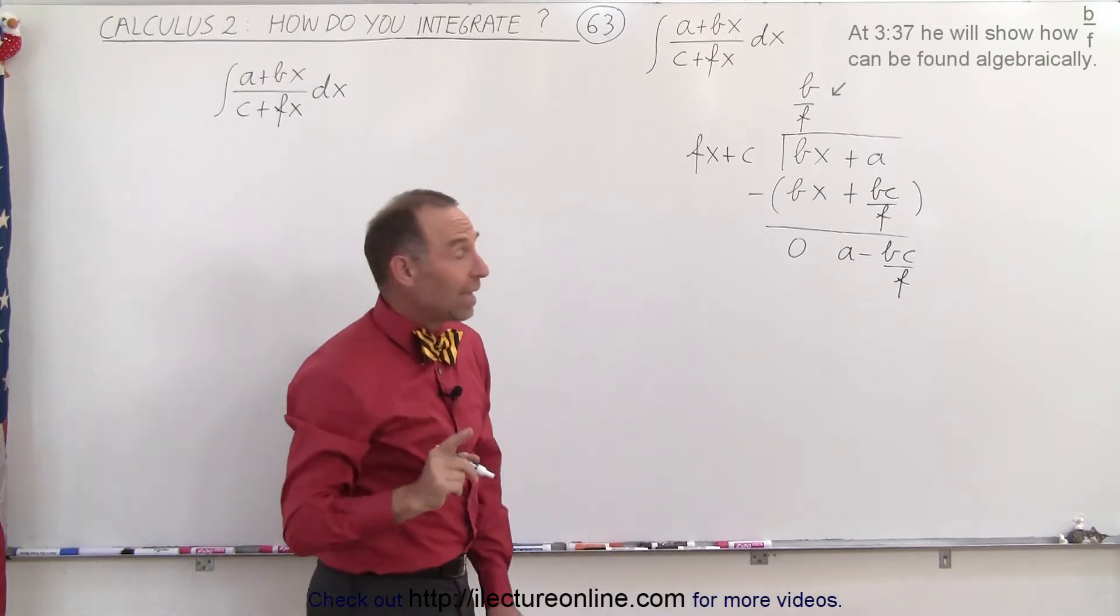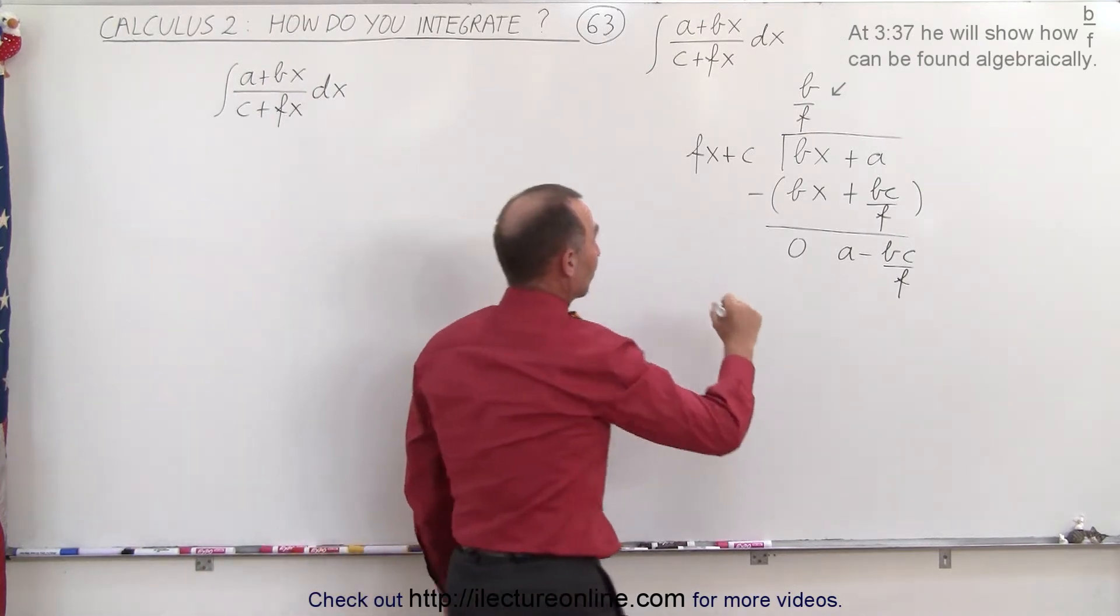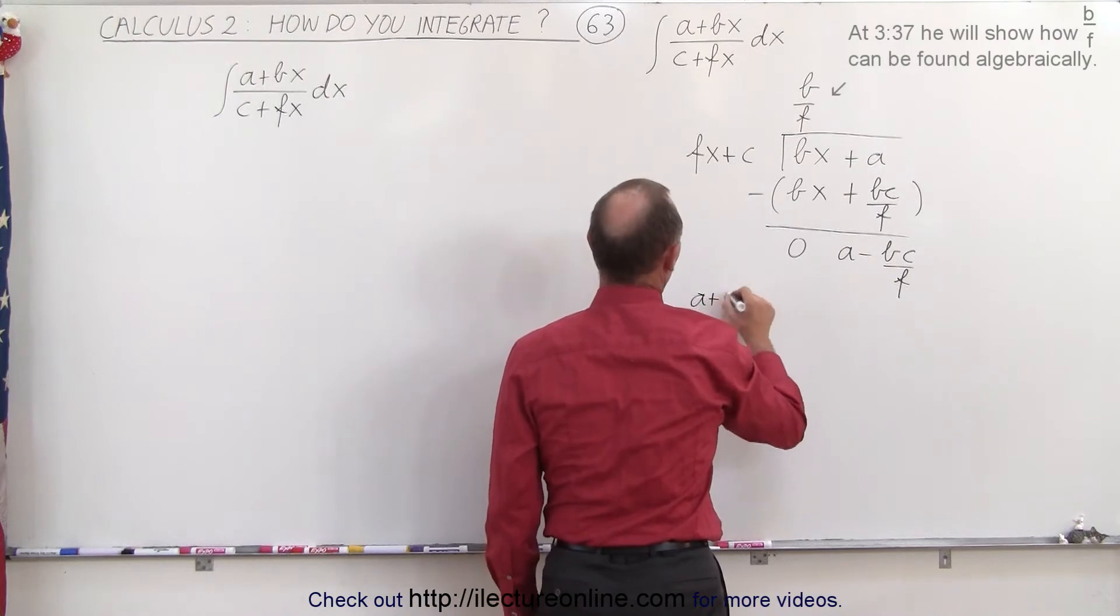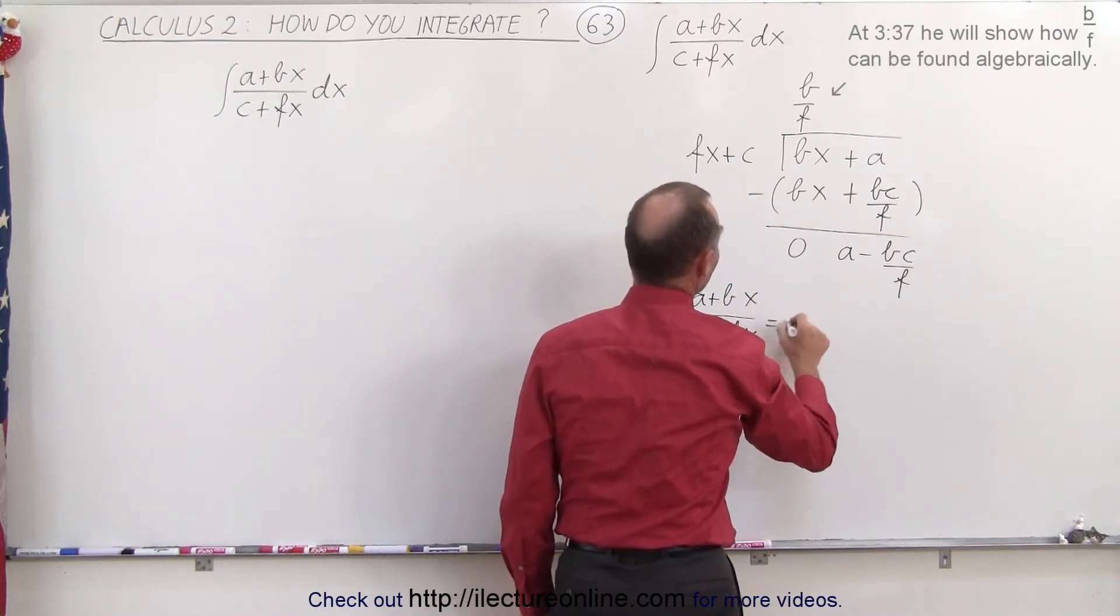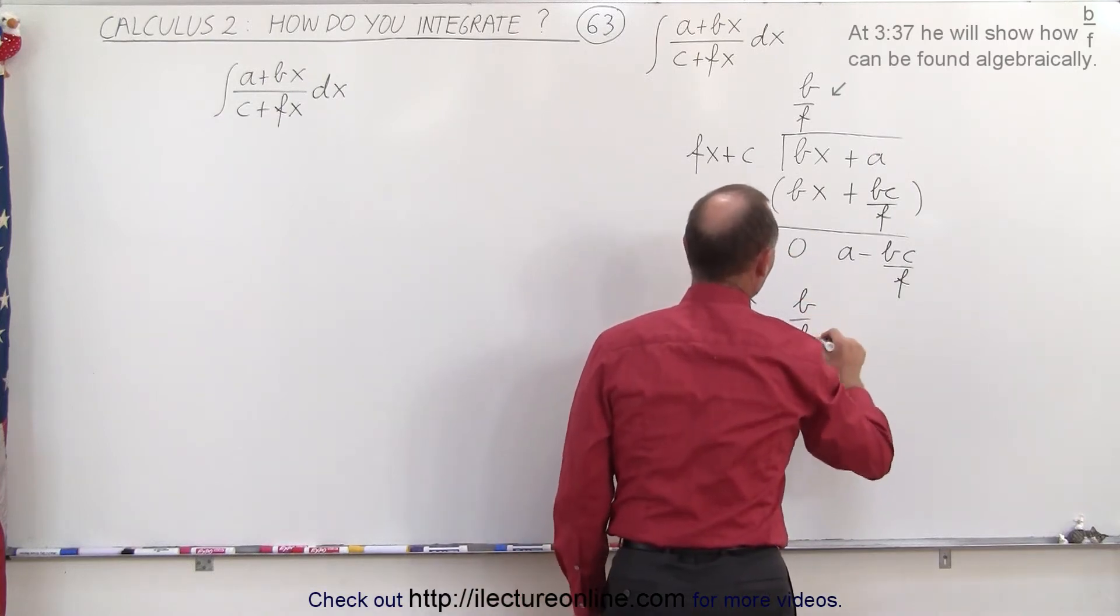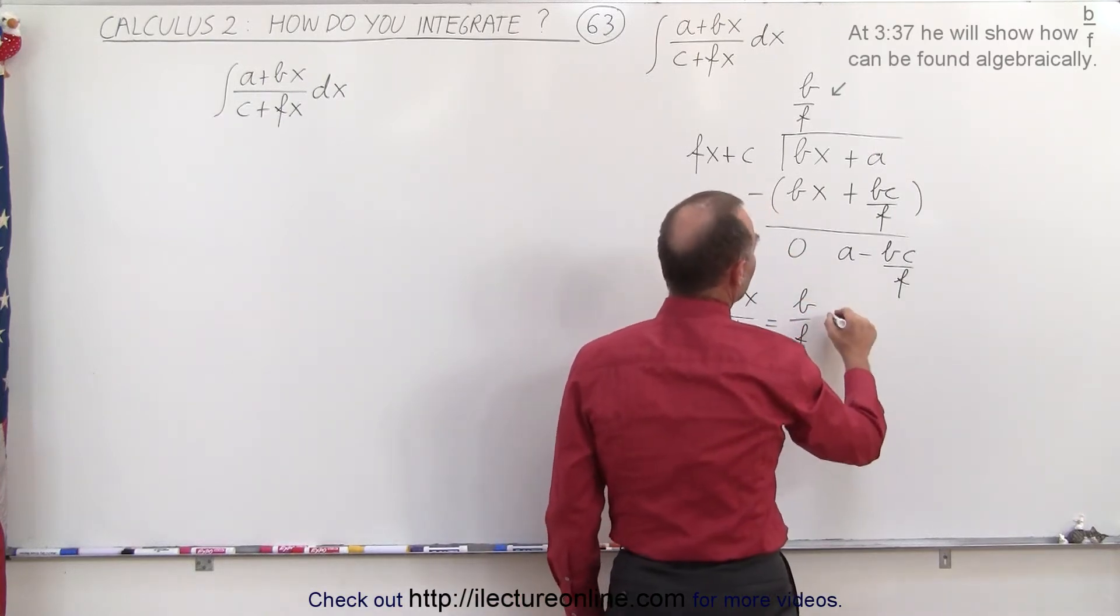Now what we have here is the result of that division. That means that a plus bx over c plus fx can be written as b over f plus the remainder.